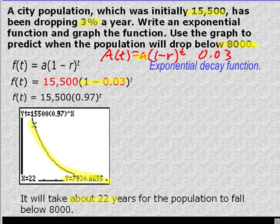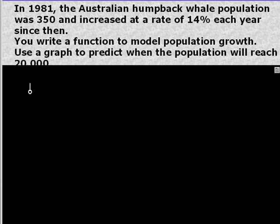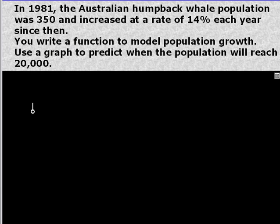So last thing to do. This is one for you to try to make sure you understand. You should figure out whether it's which of the forms of the model equations you should use. And then figure out when the population will get to 2,000.